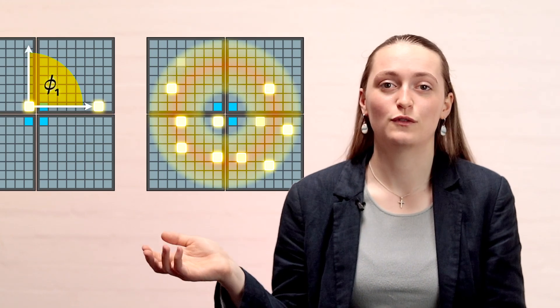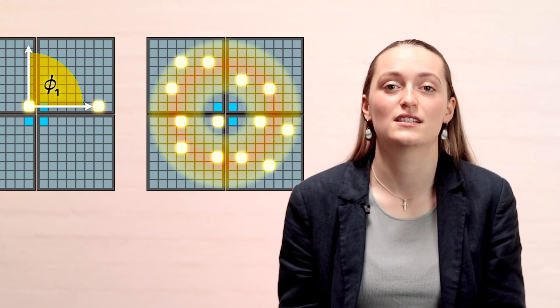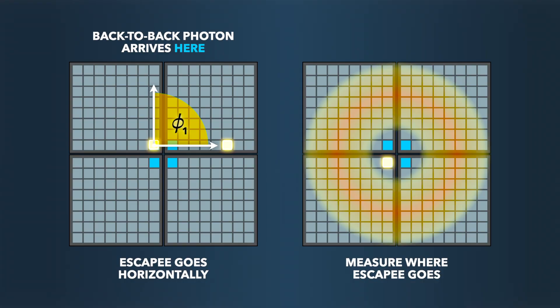We see this circle forming, all the possible directions the photon could scatter to. However, the circle is not the same brightness all the way around.